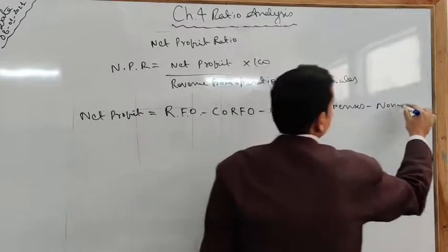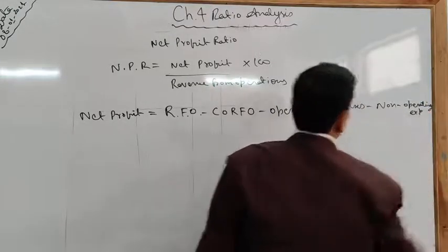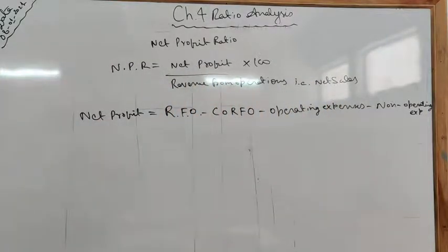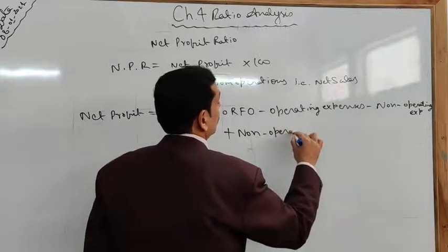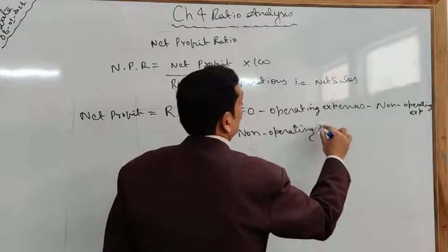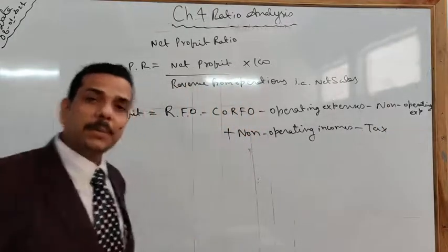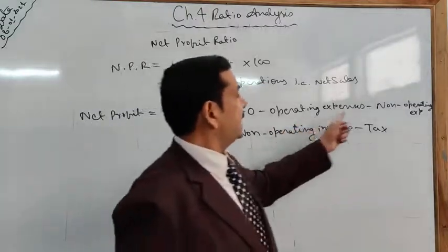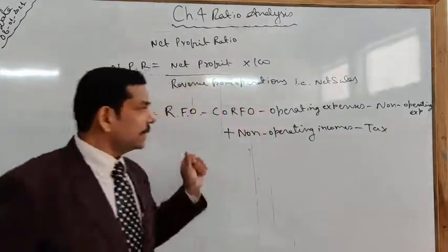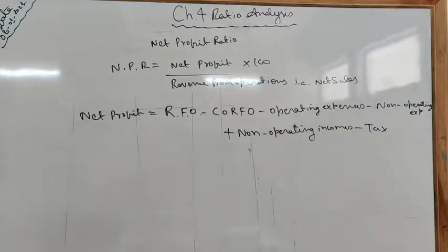Continuing the net profit formula: minus non-operating expenses, plus non-operating income, and minus tax. If you remember from last year's profit and loss account, after gross profit we separate all operating expenses and non-operating expenses, then deduct tax — what you get is net profit.